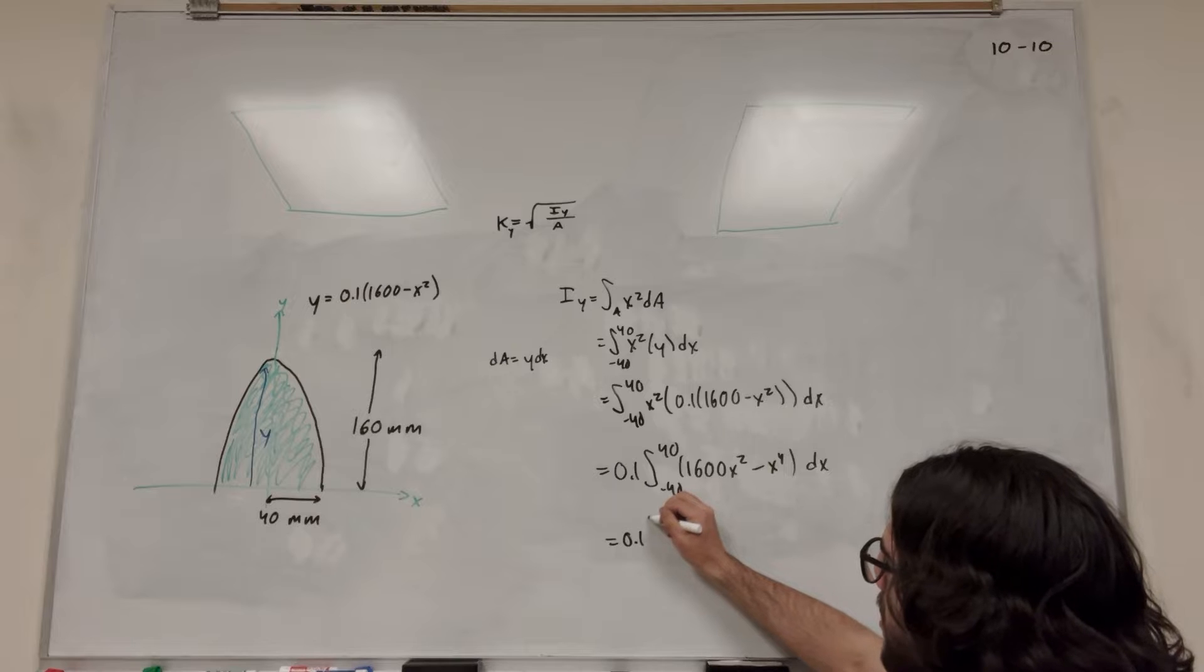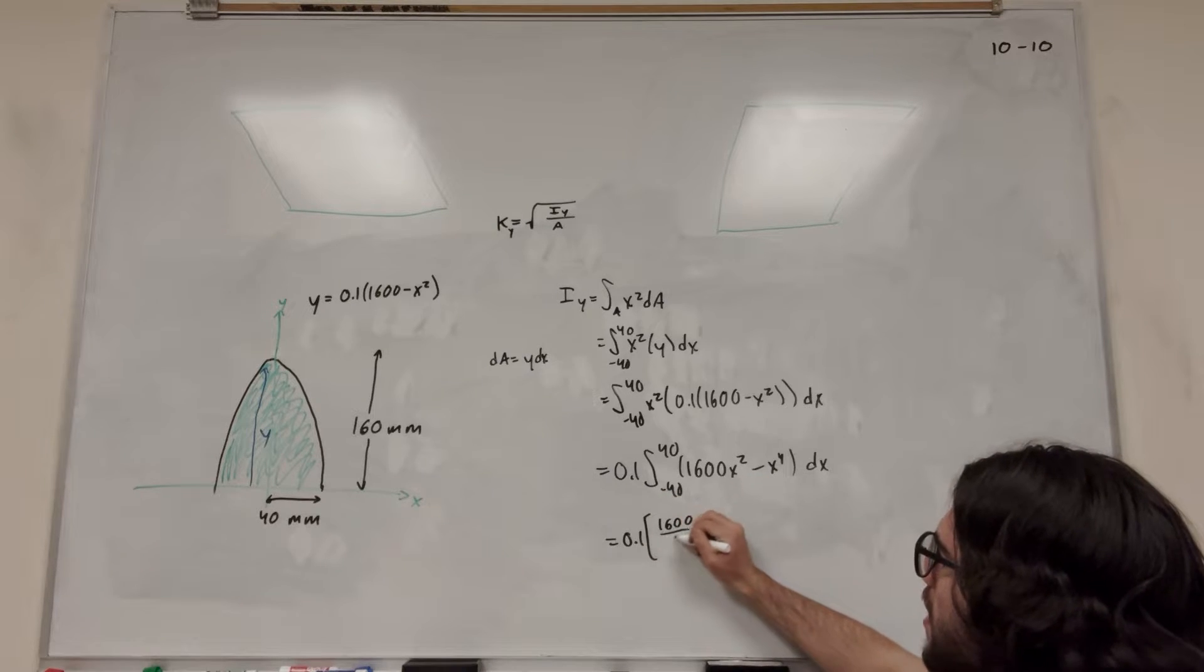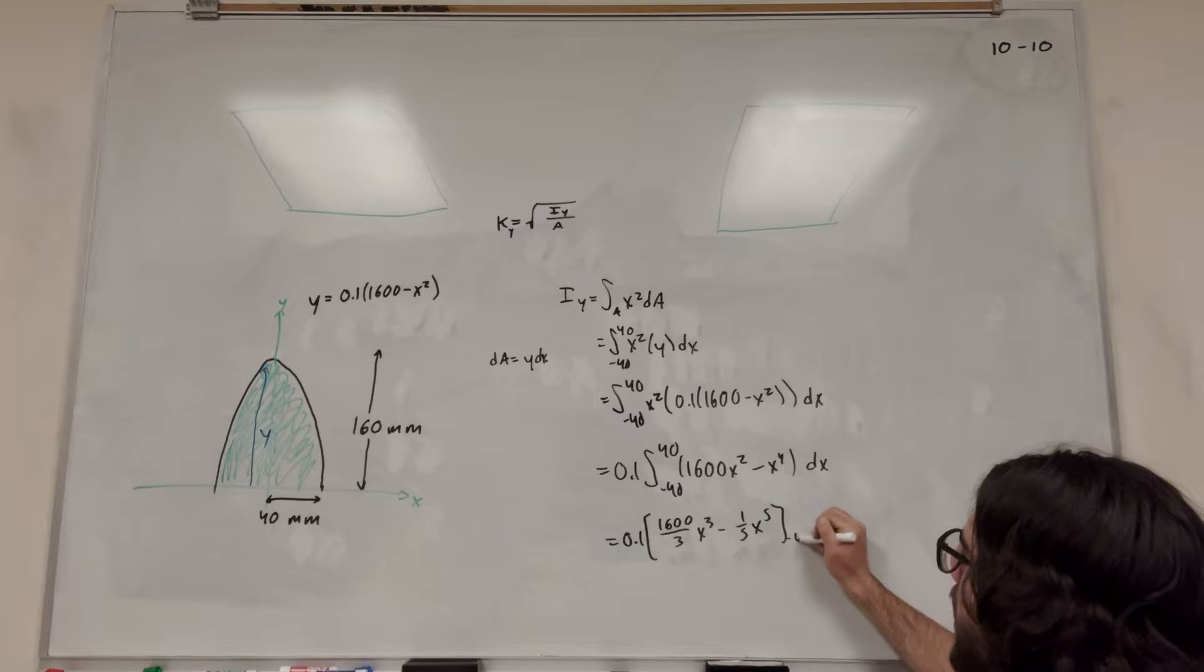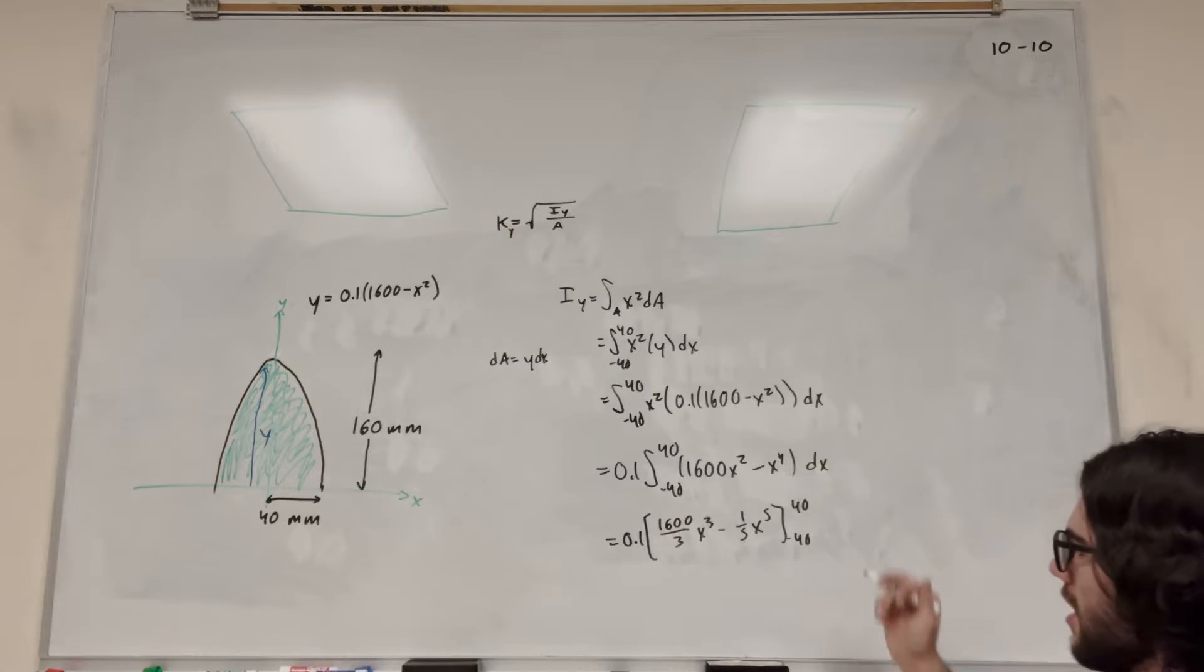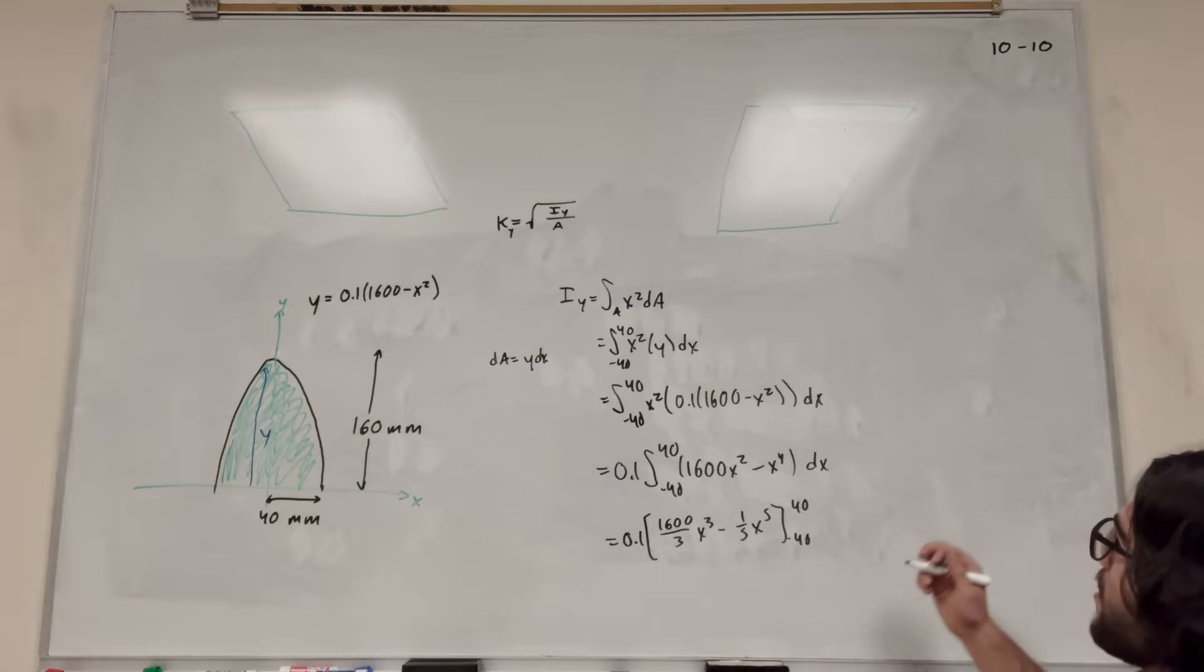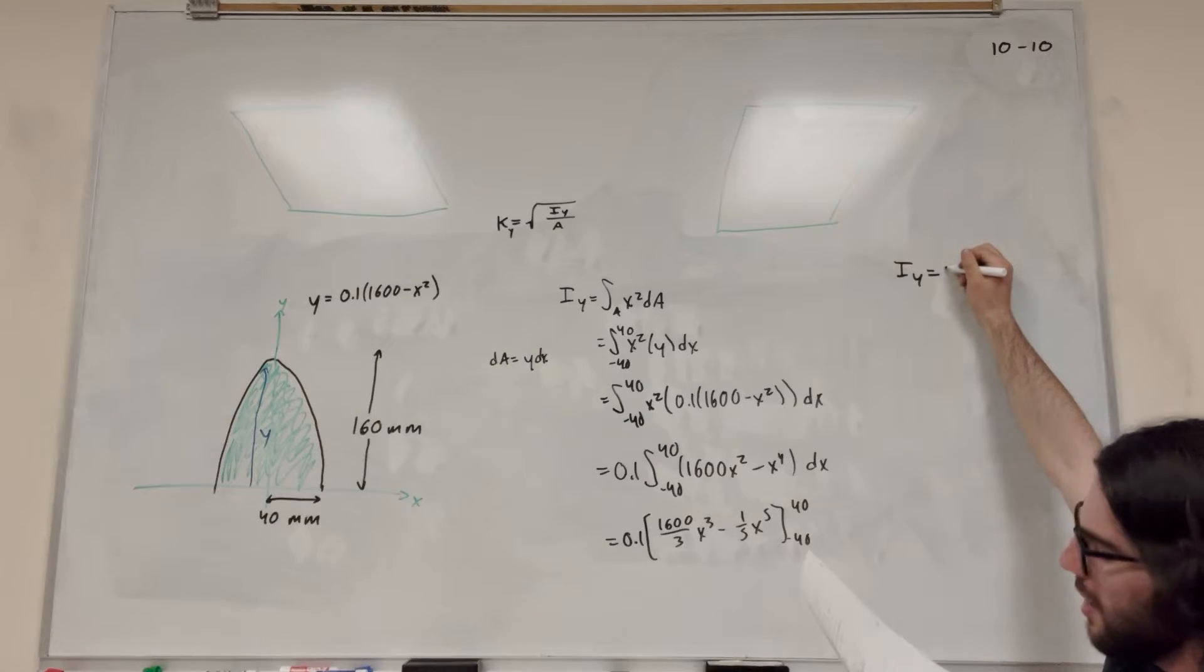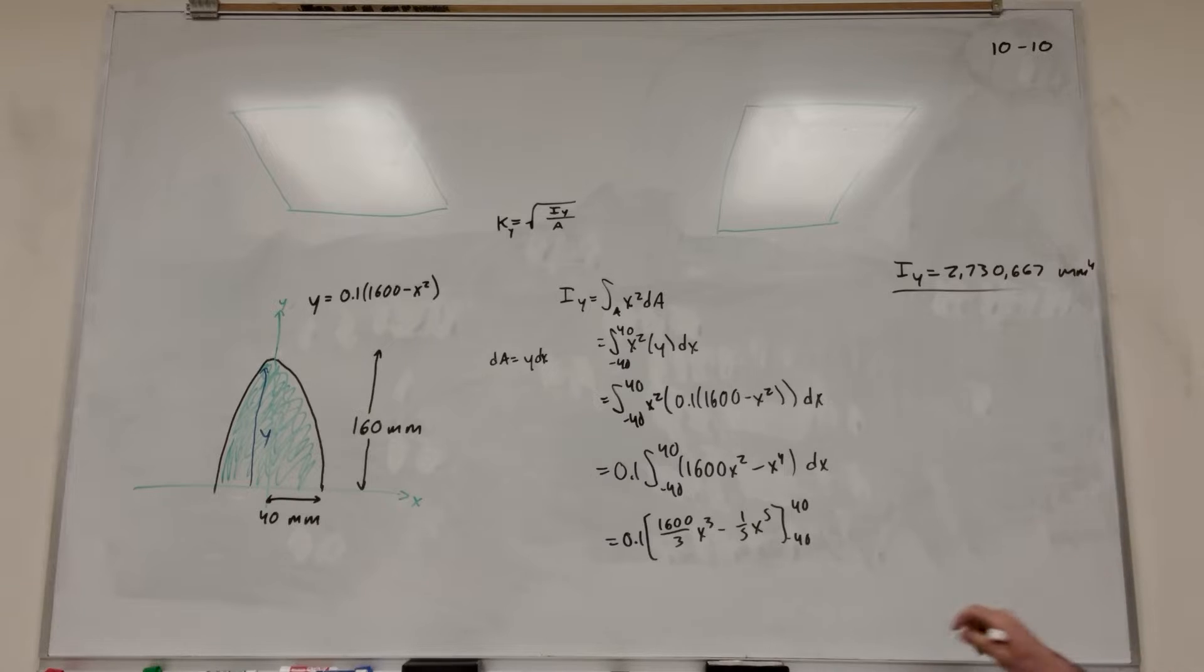So then we're just going to integrate this. So the 0.1 stays out. It's going to be 1,600 over 3 x to the 3rd, minus 1 fifth x to the 5th, from negative 40 to 40. So I'll leave this to you to plug it into your calculators. You're just going to put in 40 for x and then negative 40. I'm pretty sure if you've made it this far, you know how to do this. And you're going to find that I of y is equal to 2,730,667 millimeters to the 4th. All right. So that's how you do that part.